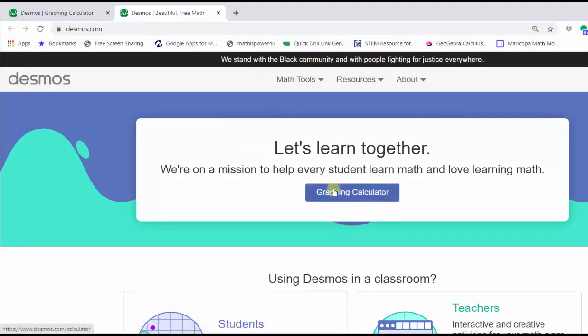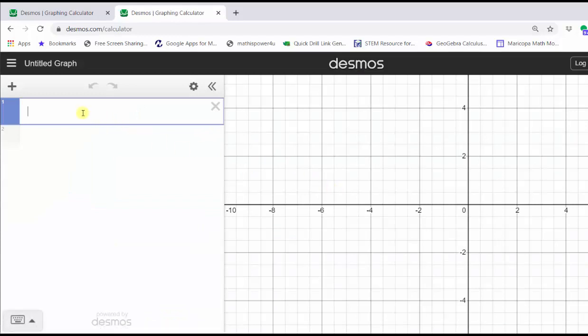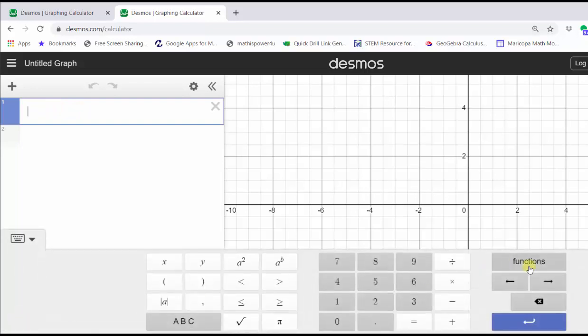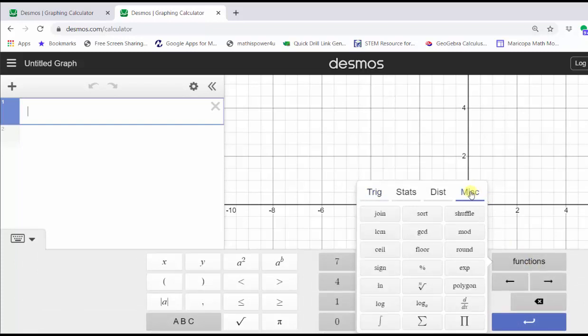To do this, go to desmos.com and click Graphing Calculator. In cell one, we can type in round from the keyboard or we can open the desmos keypad by clicking the show keypad button in the lower left-hand corner, click Functions, click Miscellaneous, and click Round.